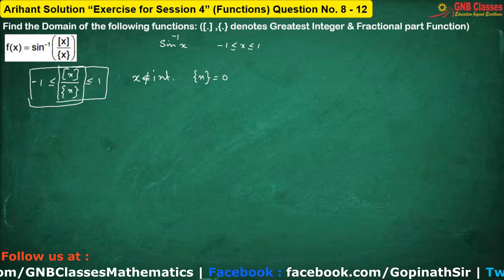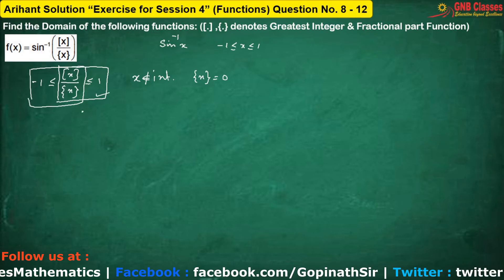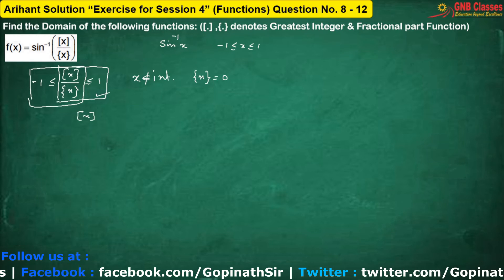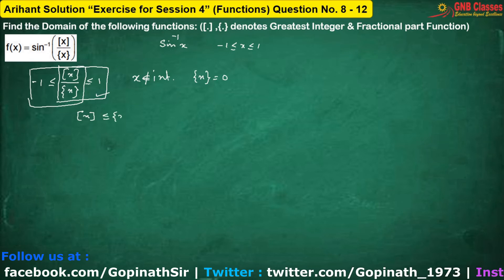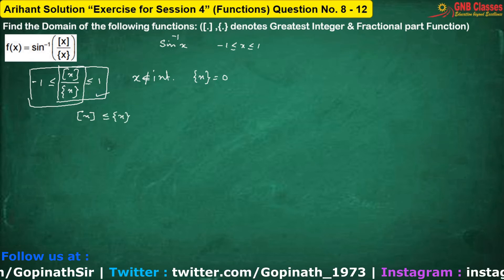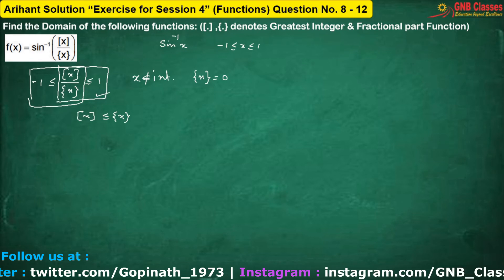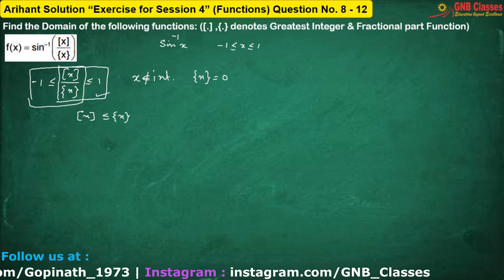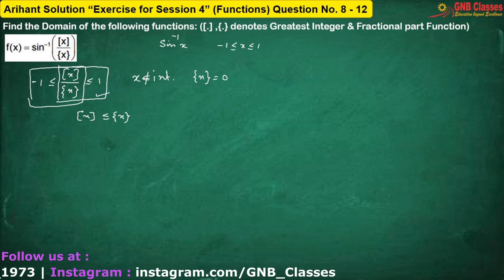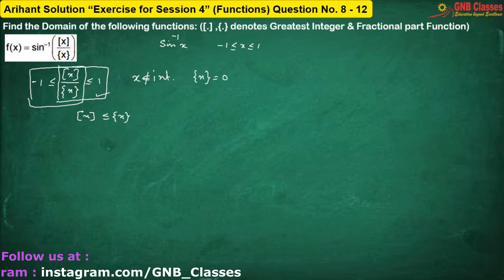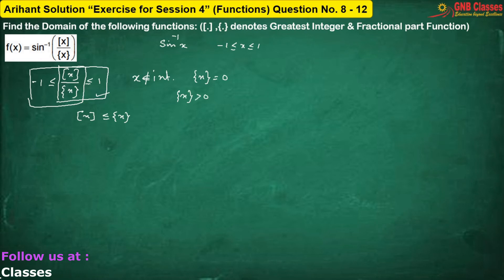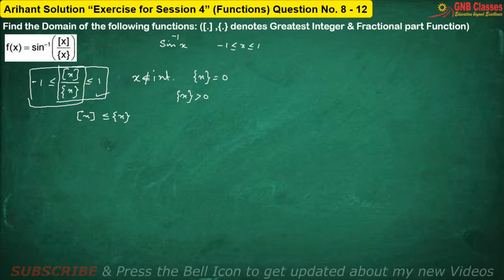From the first inequality we get floor(x) ≤ fractional part of x. I cross-multiplied in the inequation because fractional part of x is always greater than 0 — that is why the sign is preserved.